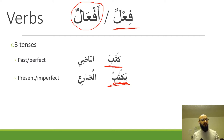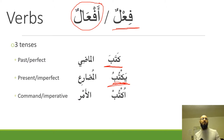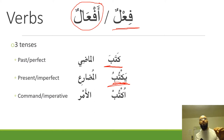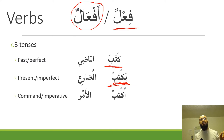Most grammarians add a third tense: the command or imperative tense, known in Arabic as al-amr. An example is uktub. So we have the same verb showing three tenses: ketaba — 'he wrote' (past), yaktubu — 'he is writing' (present), and uktub — the command.